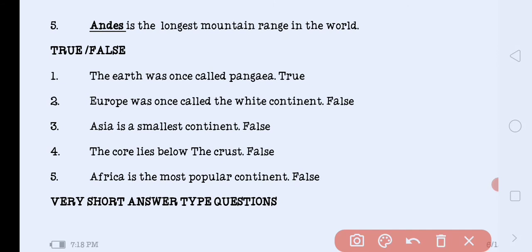Next our true and false. We need to identify whether the statement given is true or false. The earth was once called Pangaea. Earth was also called Pangaea. Answer is true.